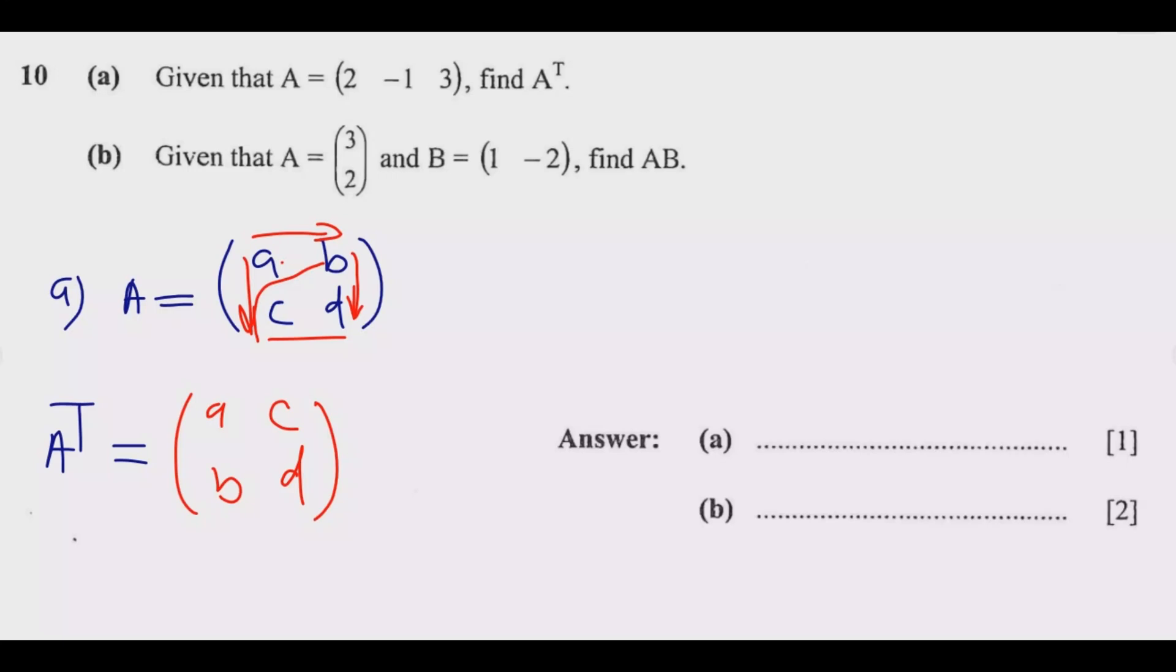A and d maintain their positions, but b and c swap. Alternatively, what you're saying is these are swapping. That's what it means for a 2 by 2 matrix. The same principle applies in this case.